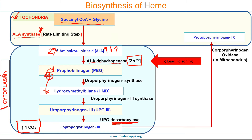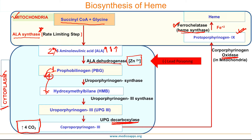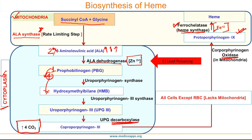Coproporphyrinogen 3 then moves to the mitochondria, where it is converted to protoporphyrinogen 9 by an oxidase enzyme that is only present in mitochondria. The final step of heme synthesis also takes place in mitochondria, catalyzed by ferrochelatase, also called heme synthase, which attaches ferrous iron to protoporphyrin to form heme.